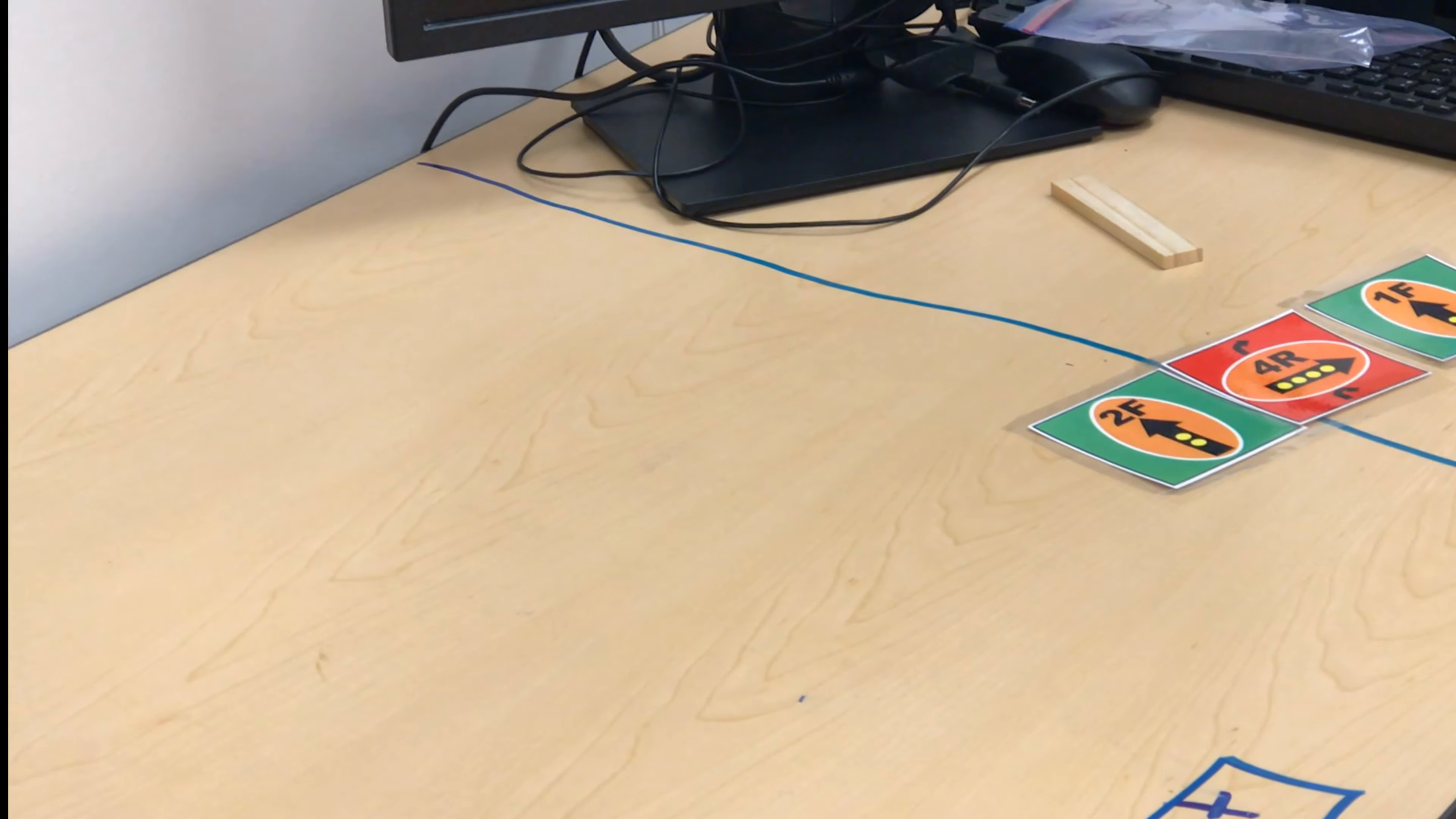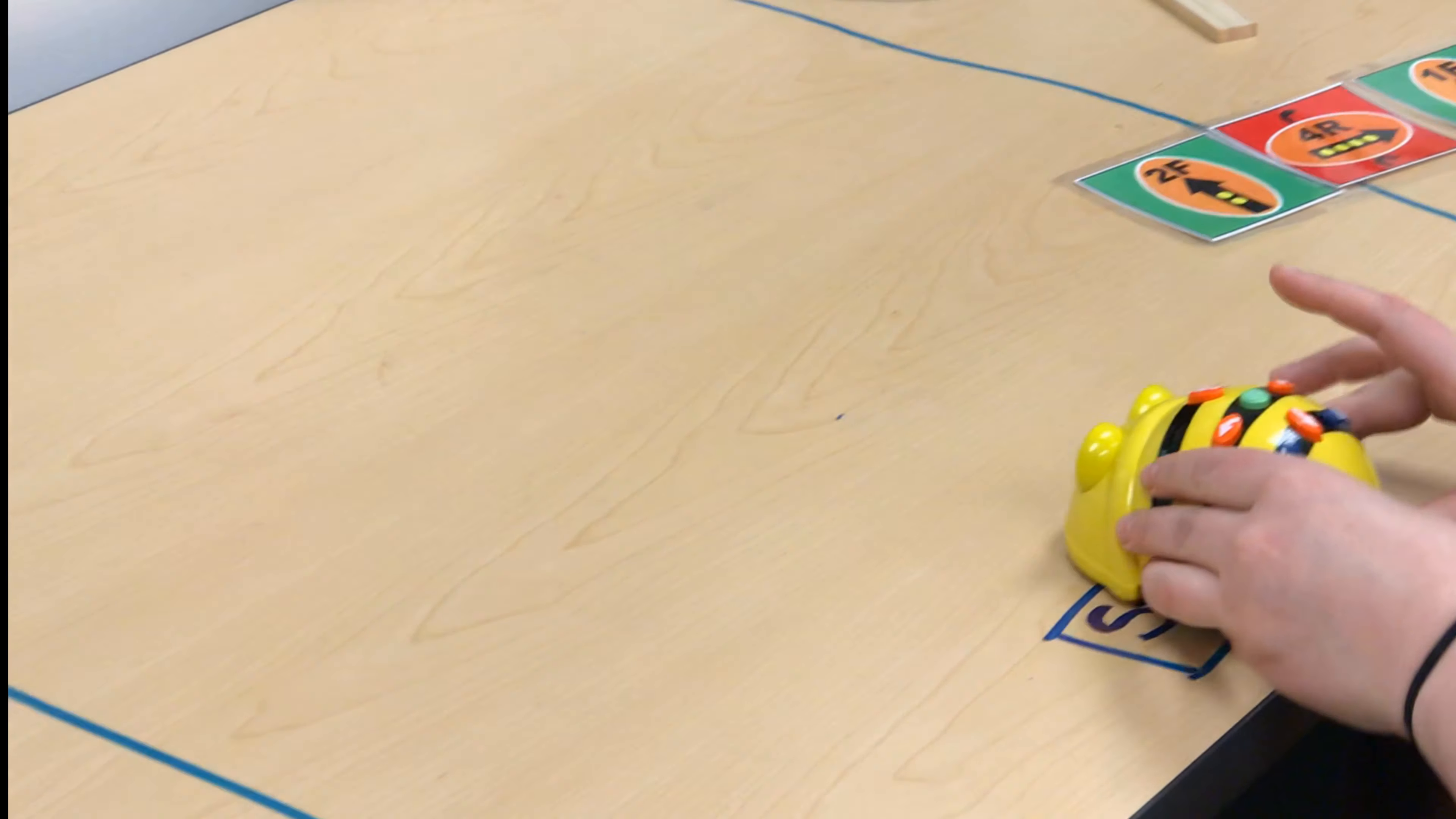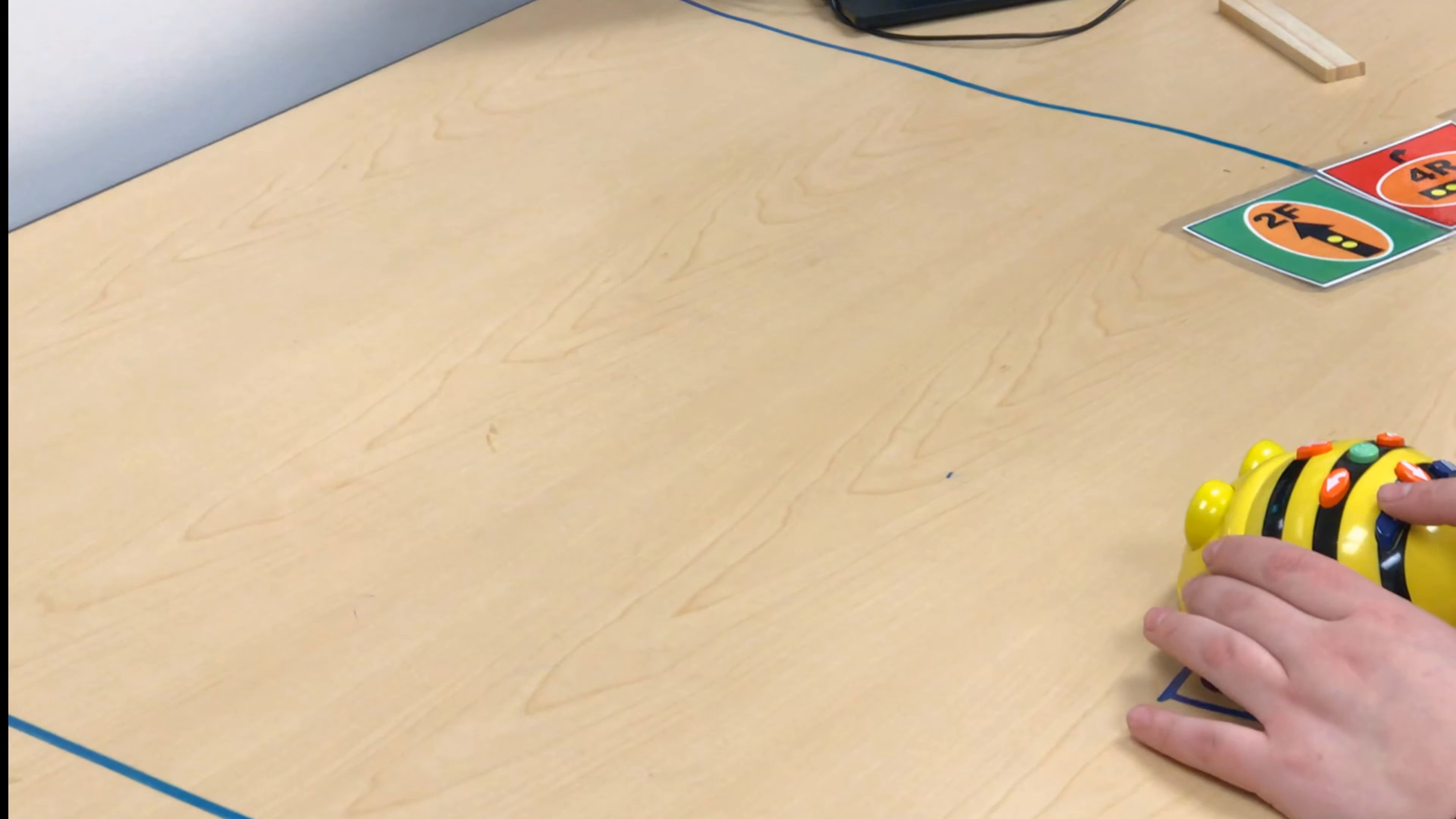Then you're going to take your Bee-Bot, make sure it's on, and put it on your starting point. What button do we always start with? Clear. Make sure you clear your Bee-Bot.